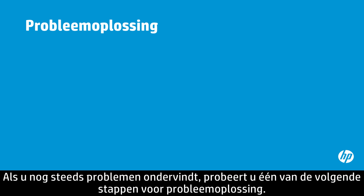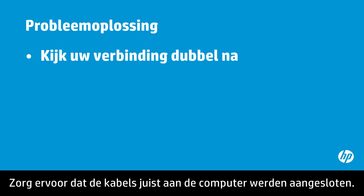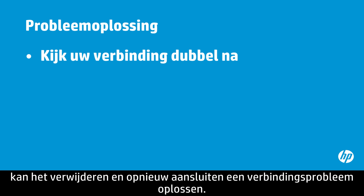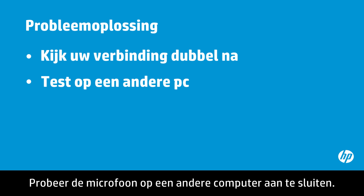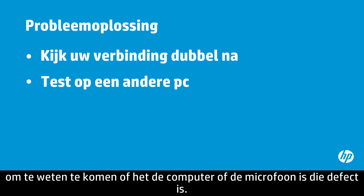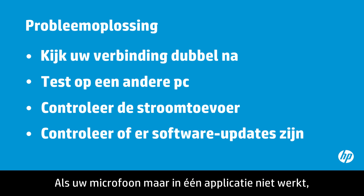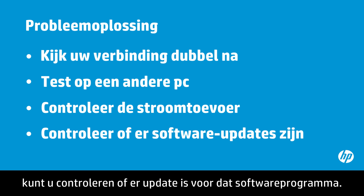If you are still experiencing problems, try some of the following troubleshooting steps. Make sure cables are properly connected to your computer — even if the microphone is already connected, removing and then reconnecting it might solve a connection problem. Try connecting the microphone to another computer to see if it is your computer or the microphone that is not working. Make sure your audio device has power and replace the batteries if necessary. If your microphone is not working in only one application, see if there are updates for that software program.